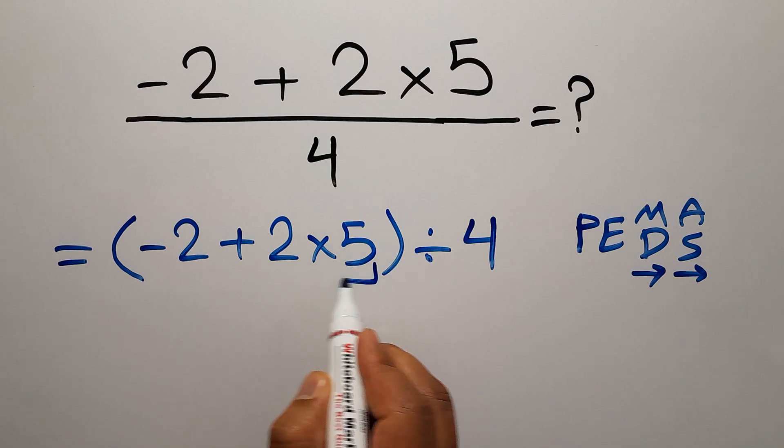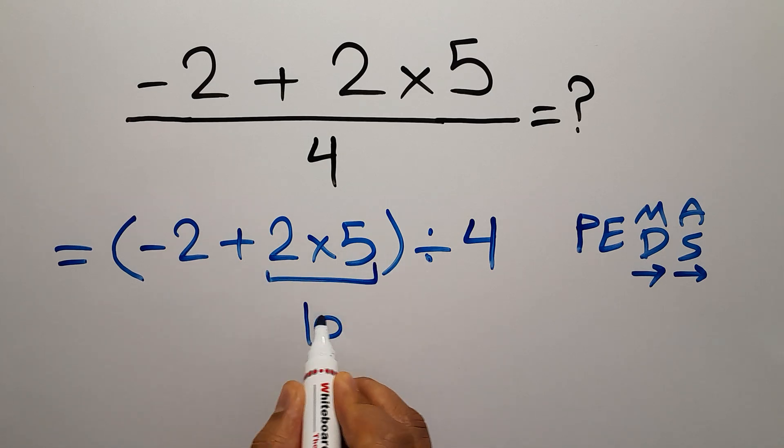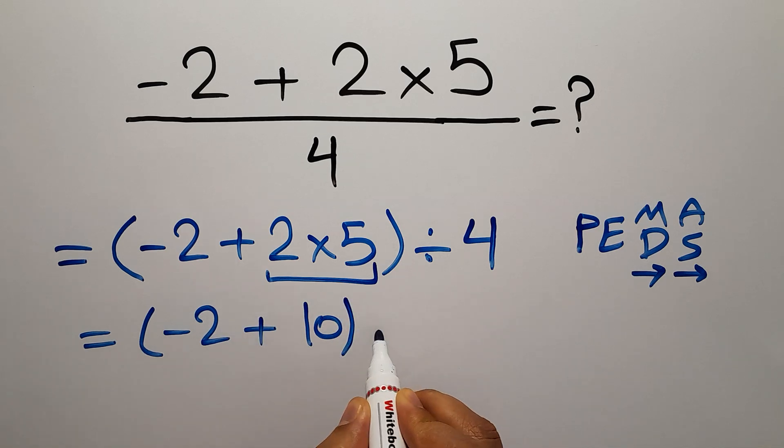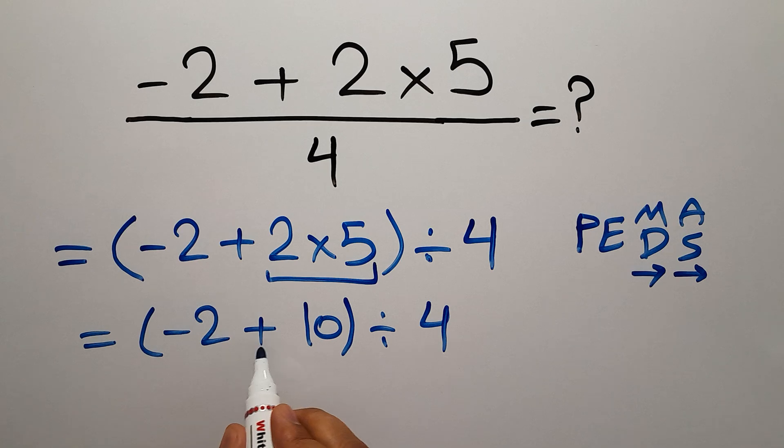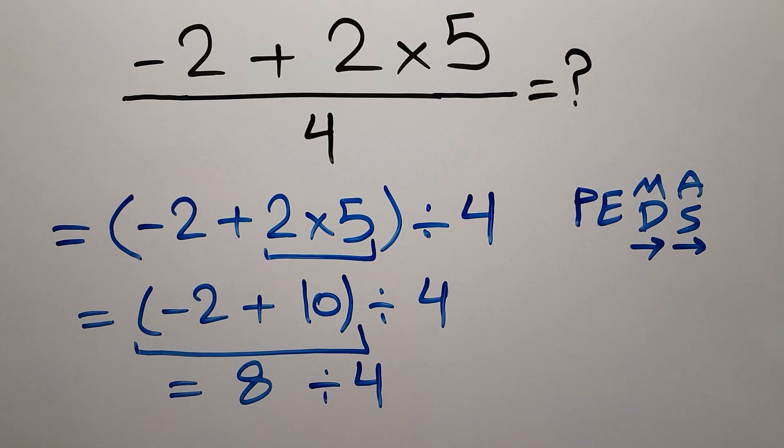2 times 5 gives us 10, so we have parentheses negative 2 plus 10, divided by 4. Now we have to do this addition: negative 2 plus 10 gives us 8. So we have 8 divided by 4.